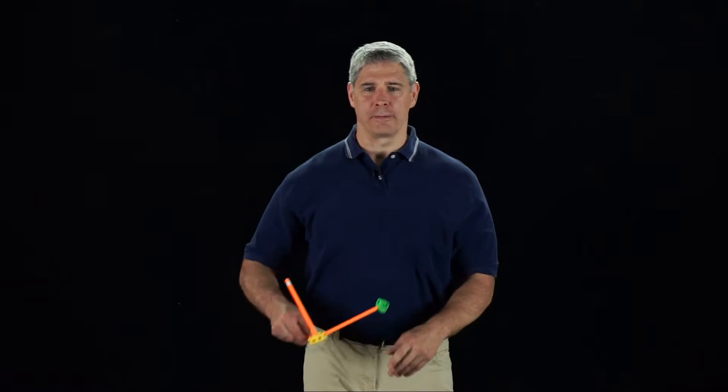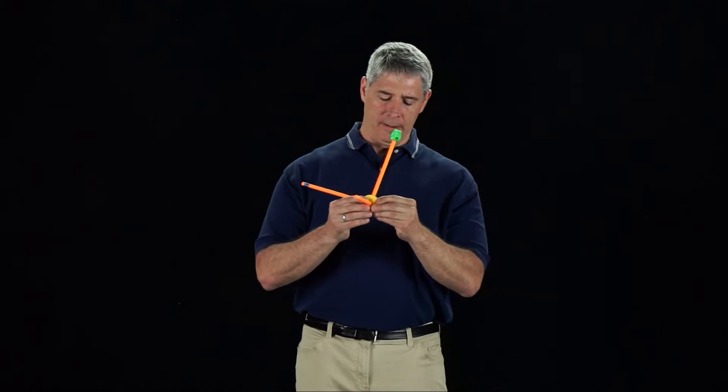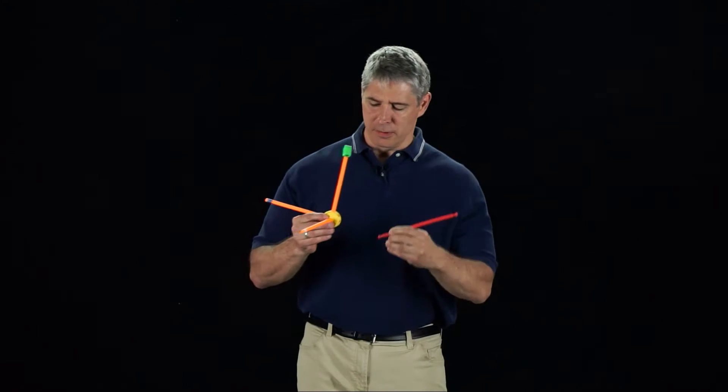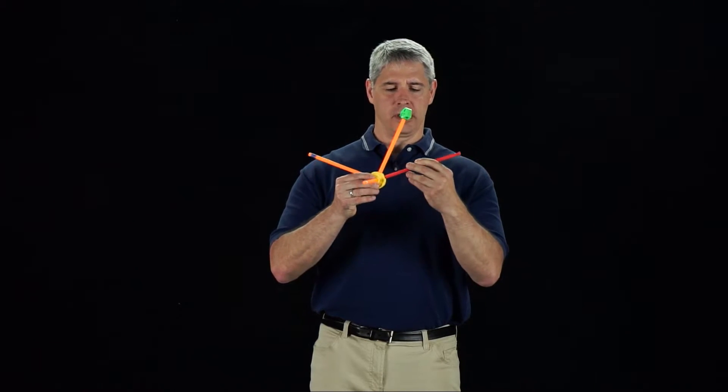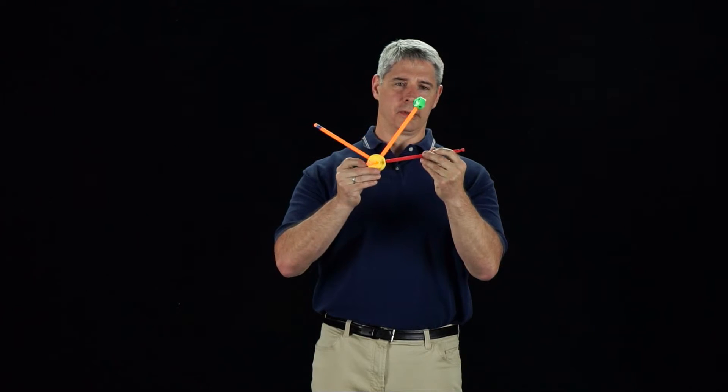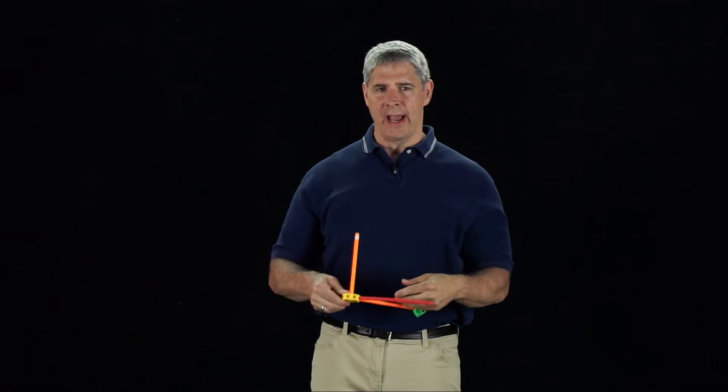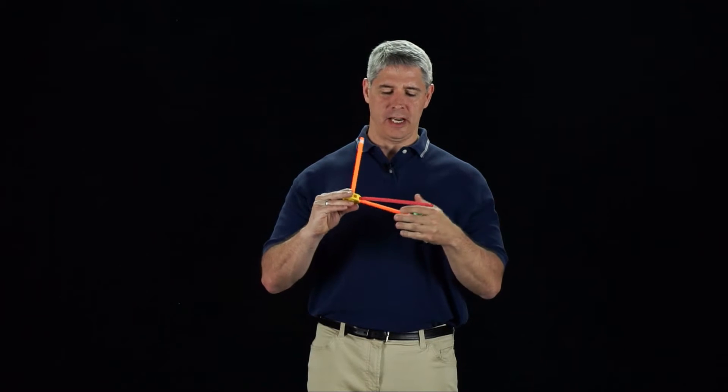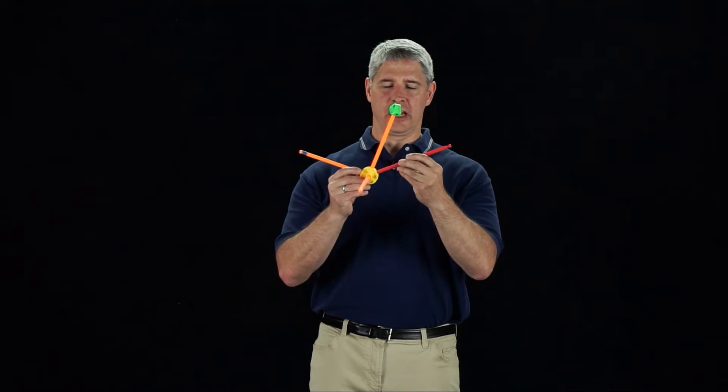This tinker toy coordinate frame represents the body frame B. Now imagine a rotation axis passing through the origin, and the motion of the frame as it rotates about that axis according to the right-hand rule. Any angular velocity can be represented by a rotation axis, and the speed of rotation about it.